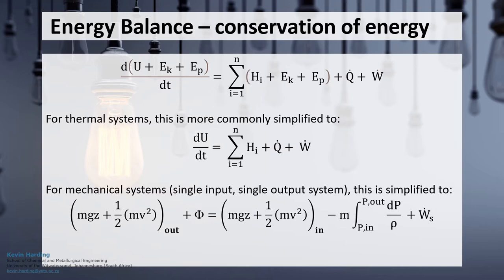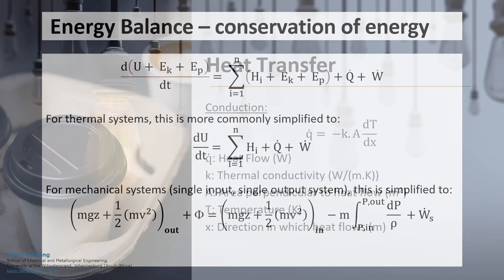In fluid flow systems with a single input single output, the original balance can be simplified to a mechanical energy balance with flow, height differences, pumping, and friction terms to calculate the velocity in a pipe.